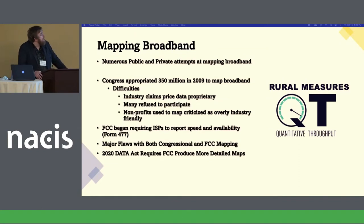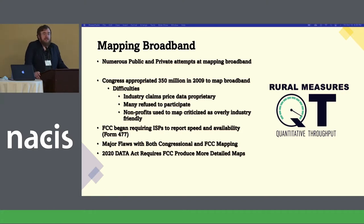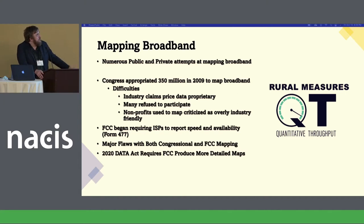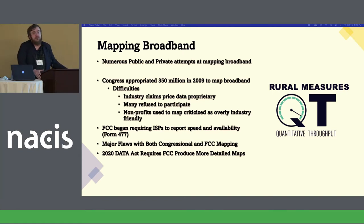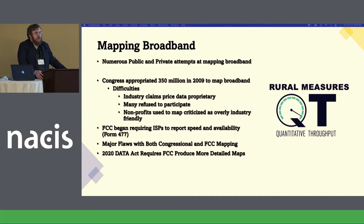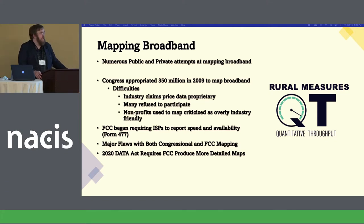So, mapping broadband. There's been a lot of attempts to do it. The difficulties have been that the industry claims the price data is proprietary. Many just refuse to participate. Non-profits tend to be very friendly with the industry — they tend to be funded by the industry, and their boards tend to be dominated by members of the industry. The FCC in 2009 began to require Form 477, which requires reporting speed data to the FCC, but as we'll see, it's kind of flawed. And in 2020, they're supposed to fix some of the problems with the data, but we'll see if that actually happens.